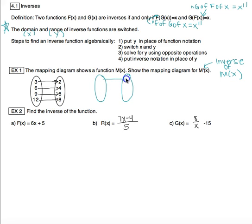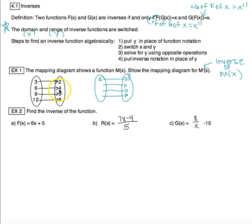I'm still going to have four rows of numbers, but what was the domain becomes the range and vice versa. So 3→2 becomes 2→3; 6→4 becomes 4→6; 9→6 becomes 6→9; and 12→8 becomes 8→12. If this were multiple choice, that is the answer you would be looking for.